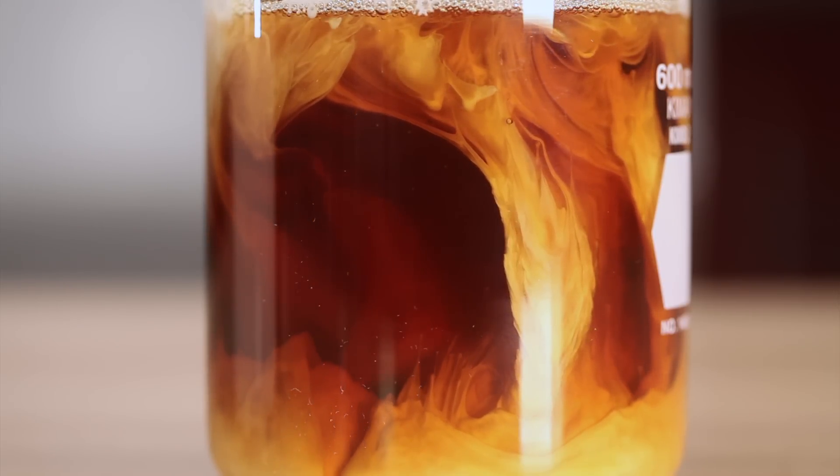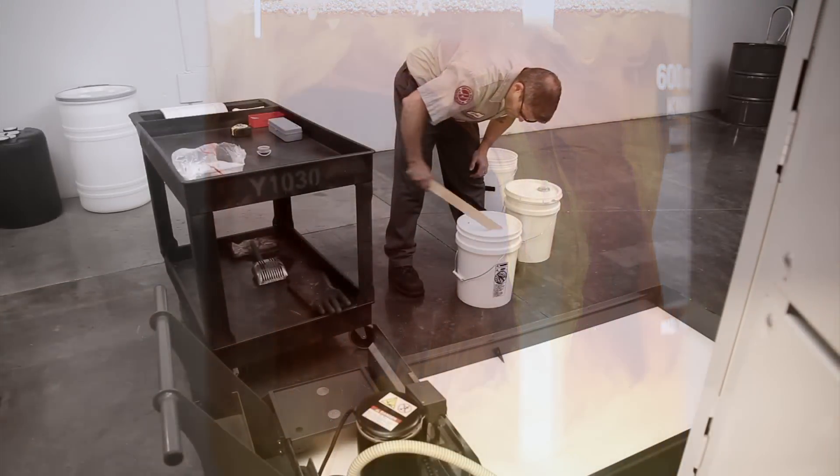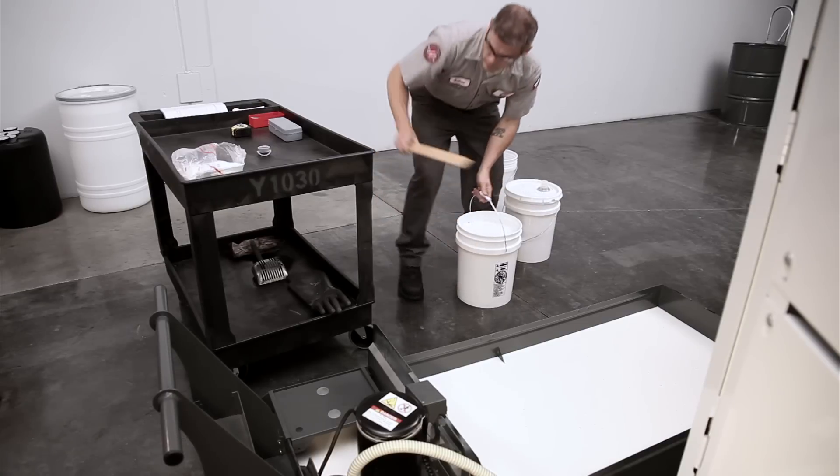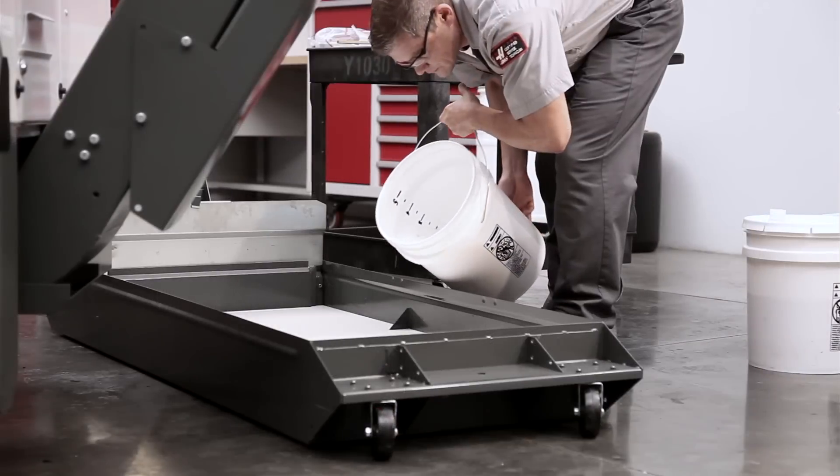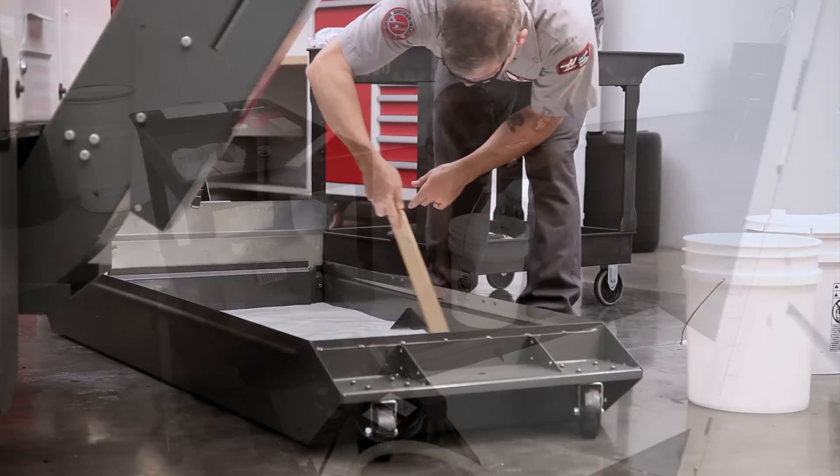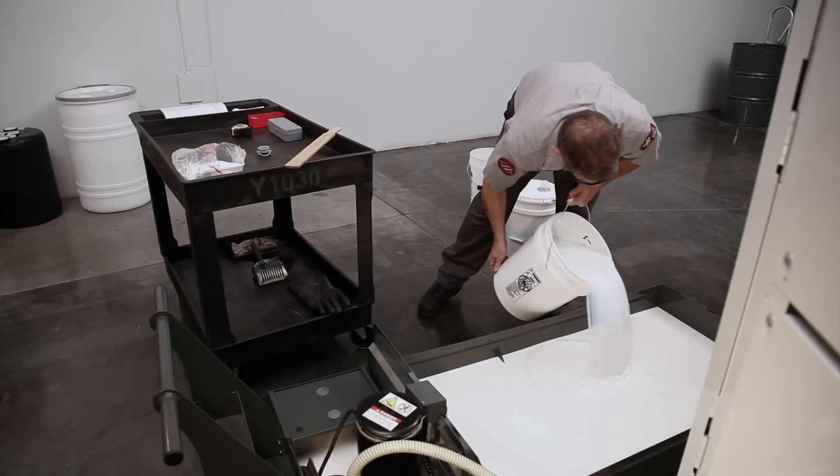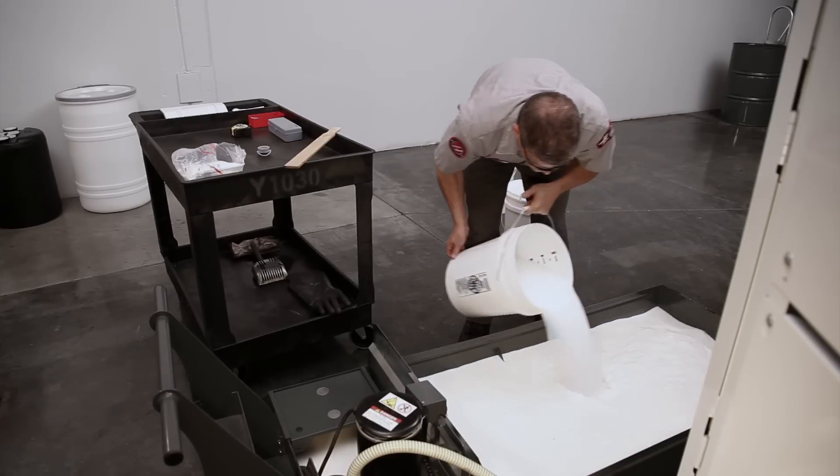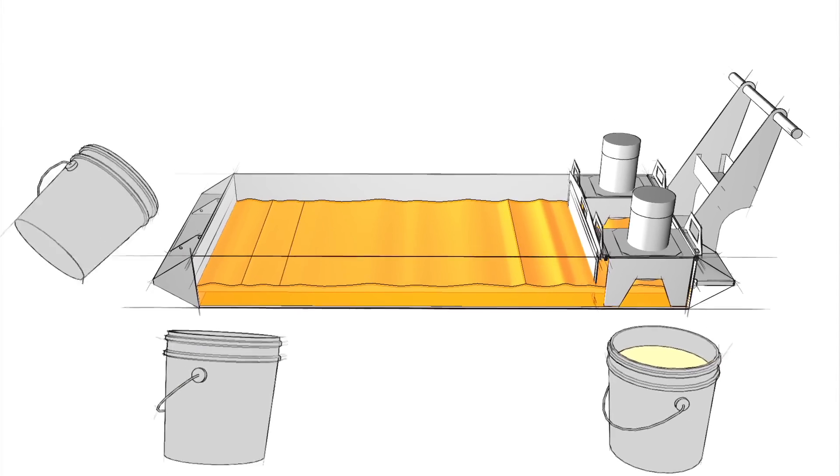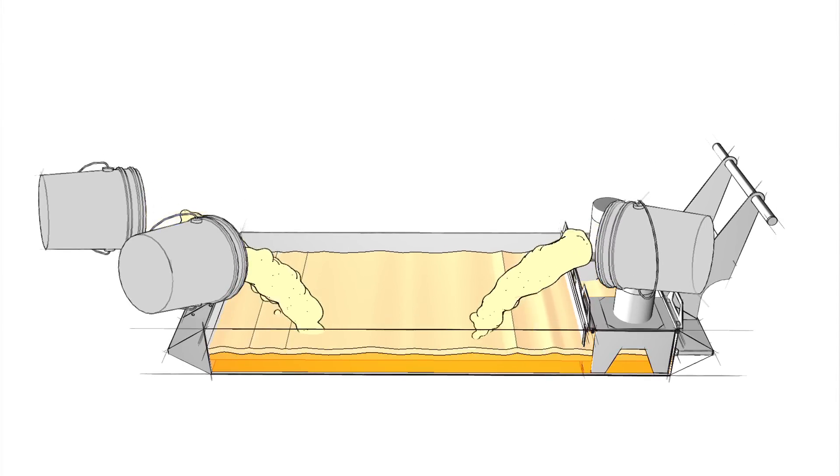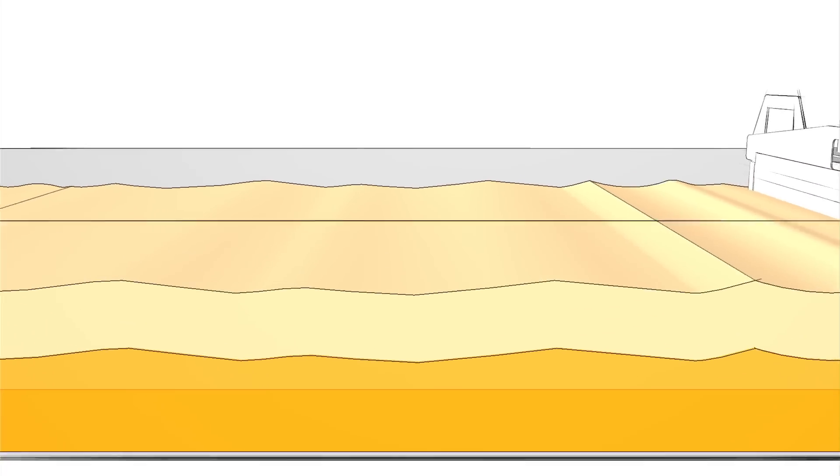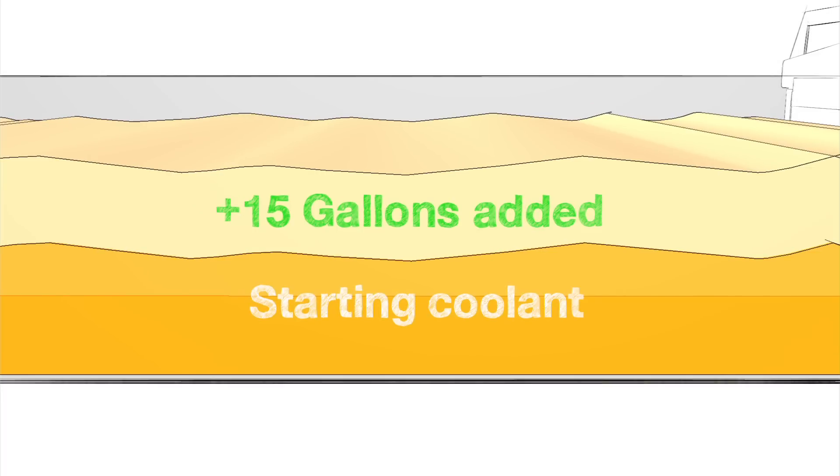With everything mixed together in the proper order, empty the bucket into the tank and mix it with the existing coolant. We'll mix a total of three buckets, each with four gallons of water and one gallon of concentrate. With the three mixed buckets added, all the concentrate we need is now in the tank. We've added a total of 15 gallons, and since we started at less than half full, our tank isn't filled yet.